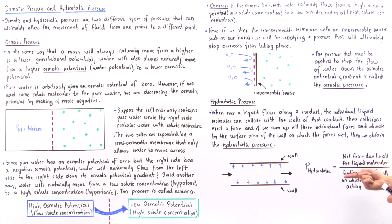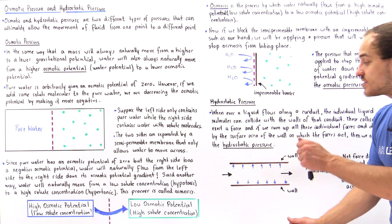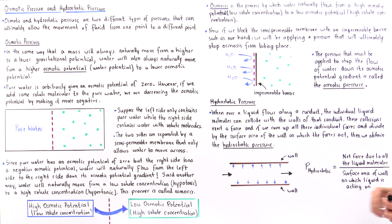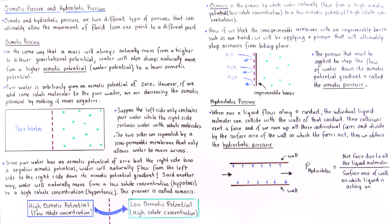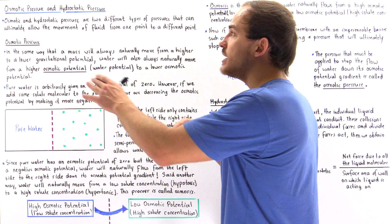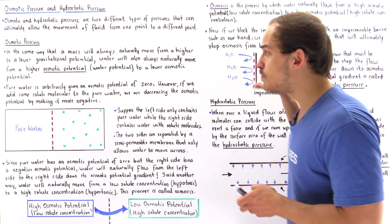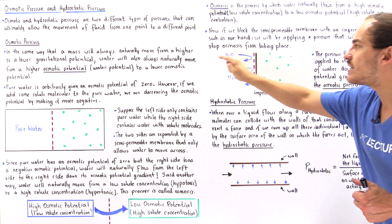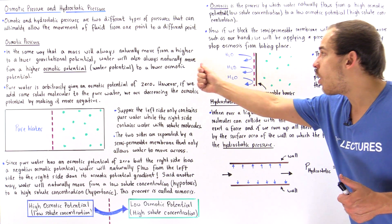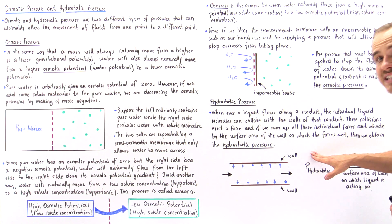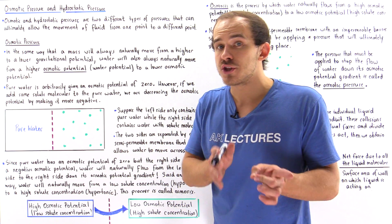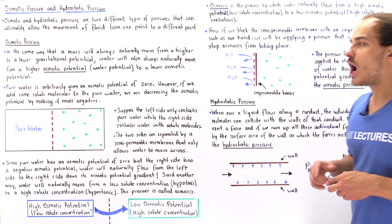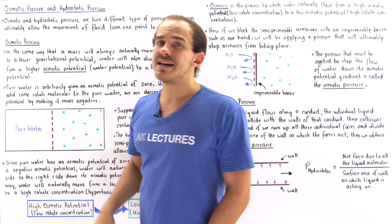For any fluid moving along a conduit, the liquid molecules exert forces on the walls. Taking the net force of all liquid molecules and dividing by the surface area of the wall gives the hydrostatic pressure. In summary, osmotic pressure is the pressure applied to prevent osmosis — stopping water from moving down its osmotic potential gradient — while hydrostatic pressure is the pressure created by fluid molecules colliding with the walls of a conduit.